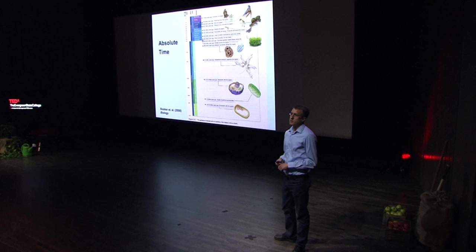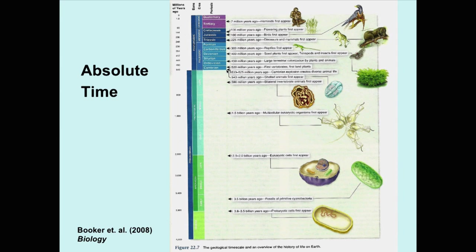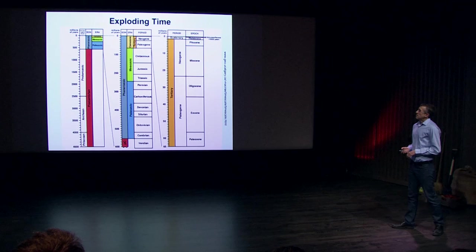A second way of thinking about geological timelines is absolute time. Here's an example from a college biology textbook where time is more or less attempted to be spread out as it actually unfolds. The effect is that a lot of events are compressed close to the present. You might also think of this as poorly formatted time.